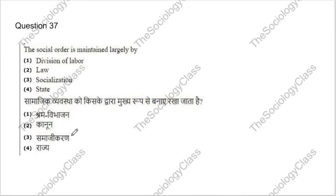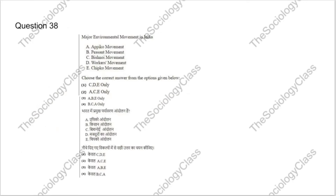Question 37: The social order is maintained largely by what? Options: division of labor, law, socialization, or state. The correct answer is C — socialization.